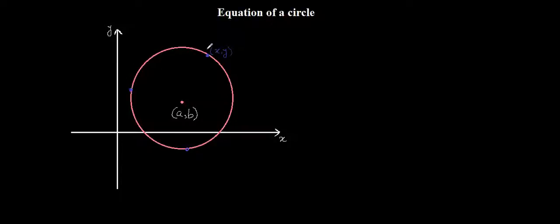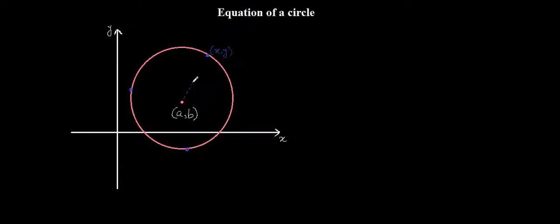x comma y is a general coordinate which represents any point lying on the circumference of the circle. We are familiar with a property of a circle which says that the distance from the center of the circle to any point on the circumference is always the same. We particularly call that distance the radius of the circle.